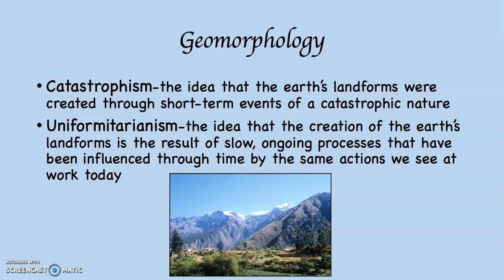Catastrophists from the 1800s, if they were alive today, would certainly be uniformitarianists. Both of these groups of people are scientists, but uniformitarianism is the prevailing view, because the Earth is a very, very old object, at least by human standards.